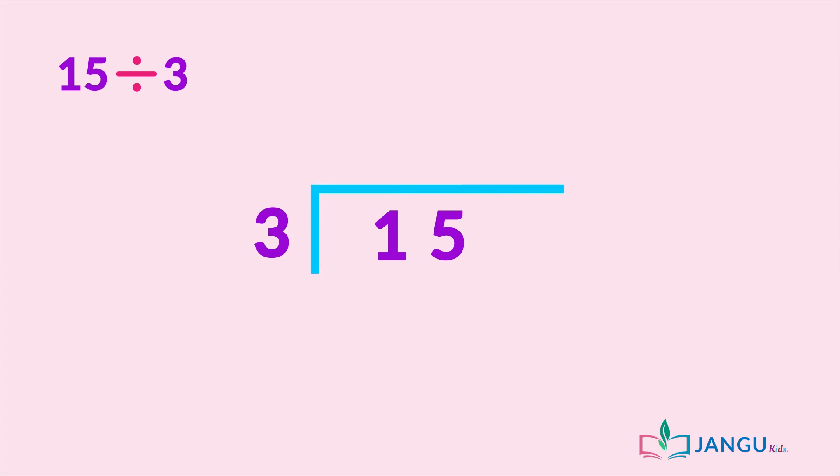Starting with 1, 3 cannot go into 1, so we divide both numbers, which is 15. 15 shared into 3 will give us 5. We write the answer on top. 15 divided by 3 equals 5.